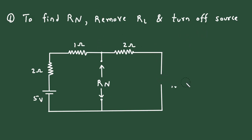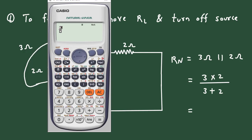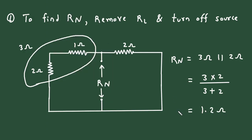Next step is to turn off all the independent sources. When we turn off a voltage source, it will be short circuited. Here both sources are voltage sources, so both will be short circuited. Now we can find the value of Rn. The 2 Ohm and 1 Ohm are connected in series, giving 3 Ohm, and this 3 Ohm is in parallel with 2 Ohm. So Rn equals 3 multiplied by 2 divided by 3 plus 2, which is 1.2 Ohm.